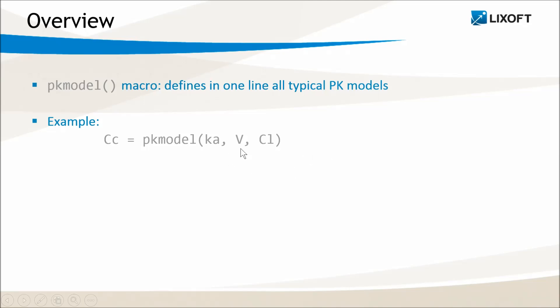It defines a one-compartment model with first-order absorption and linear elimination. The input parameters in this example, ka, V, and Cl, are reserved keywords that are used by Monolix to recognize the model. Their order is completely free, but they are case sensitive.